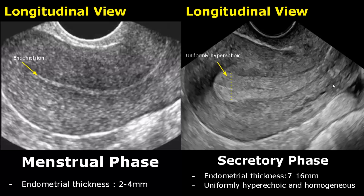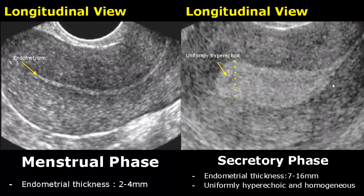Here we have another image of the endometrium in the secretory phase. The thickness lies between 7-16 mm and appears smooth, hyperechoic, and homogeneous.